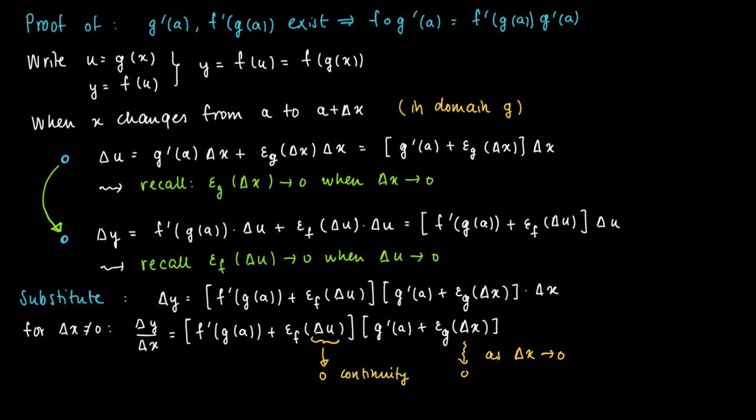So Δu goes to zero when Δx goes to zero. So g is a continuous function. Now u is g(x). So when changes in x are small, then changes in u are small. So Δu goes to zero. This also means that ε_f evaluated in Δu, for Δu going to zero, then this term also goes to zero.